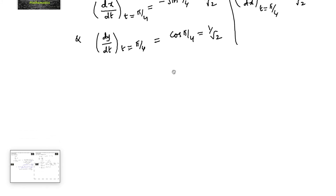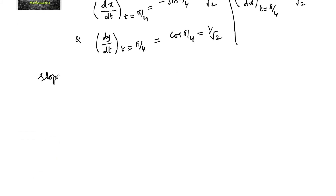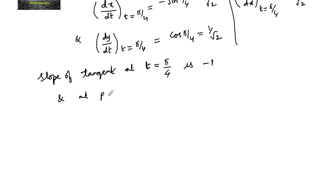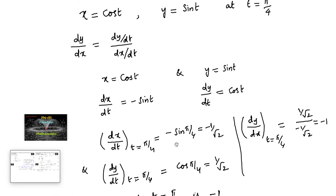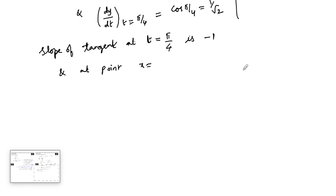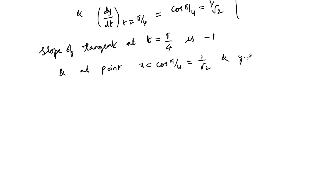So the slope of tangent to the curve at t equal to pi by 4 is minus 1. At the point, x is equal to cos(pi/4) that is 1 by root 2, and y is equal to sin(pi/4) that is 1 by root 2. So the point can be taken as (1/√2, 1/√2).